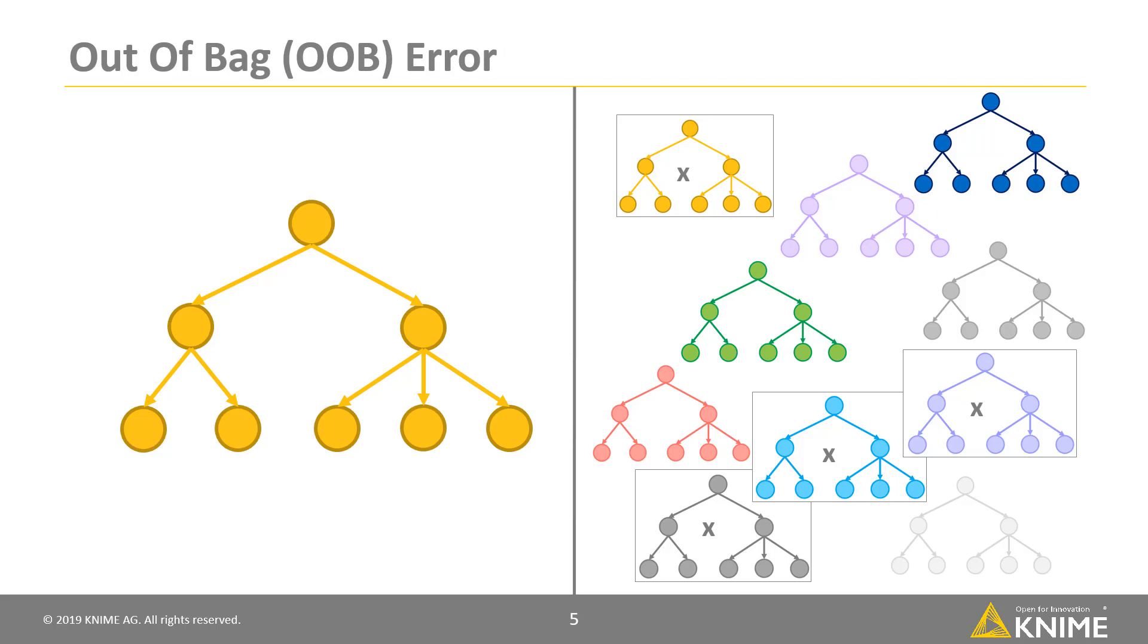A popular metric to measure the prediction error of a random forest is the out-of-bag error. Out-of-bag error is the mean prediction error calculated on all training samples X using only the trees that did not have X in their bootstrap sample.